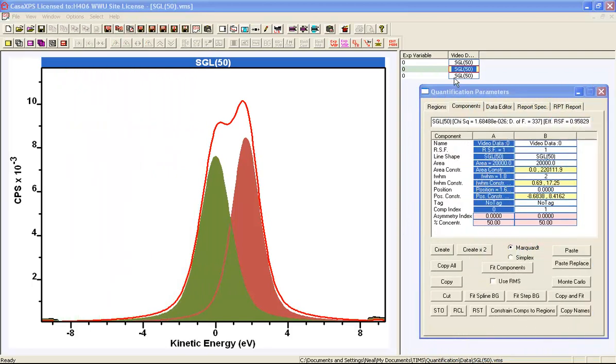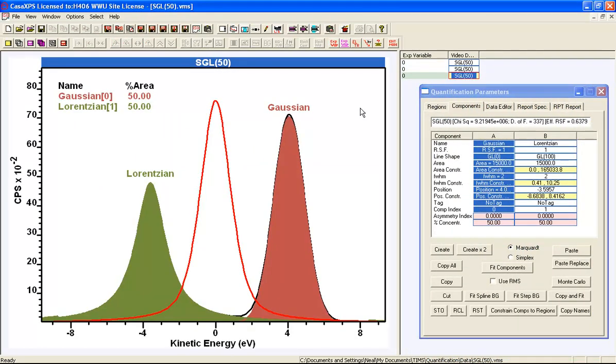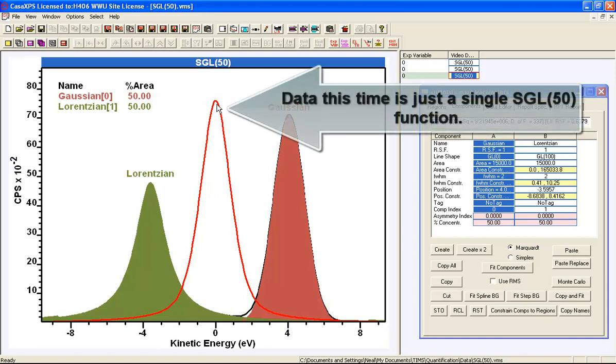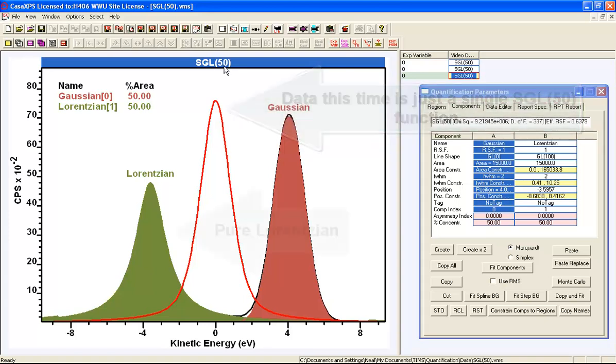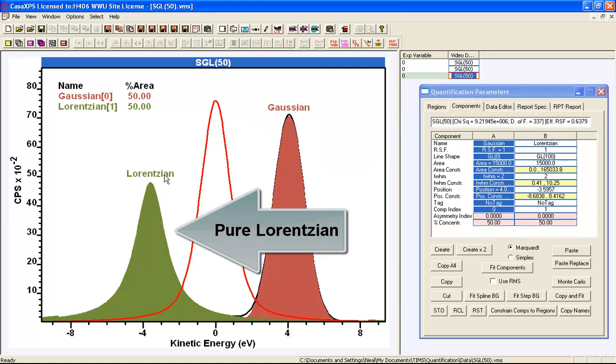As another example of how the line shape influences a peak fit, we'll have a look at just a single data envelope that is constructed from an SGL50. And the SGL50 is a linear combination of a Lorentzian and a Gaussian.